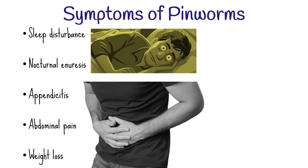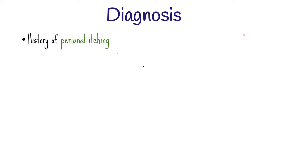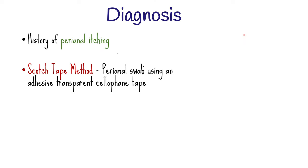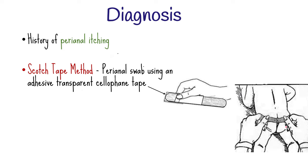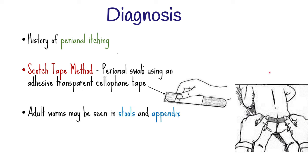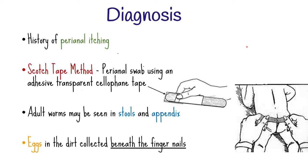In severe infections, abdominal pain and weight loss may occur. Diagnosis is made by identifying the worm or its eggs. A history of perianal itching strongly suggests pinworm infection. A perianal swab can be done using the Scotch tape method, which involves using an adhesive transparent cellophane tape mounted on a wooden tongue depressor with the sticky side held out, then firmly pressed against the anal margin, after which the tape is transferred to a glass slide and examined under the microscope. Adult worms may sometimes be noticed on the surface of stools, detected in stools collected after an enema, or found in the appendix during appendectomy. Eggs are rarely seen in feces, so fecal examination is not useful in diagnosis.